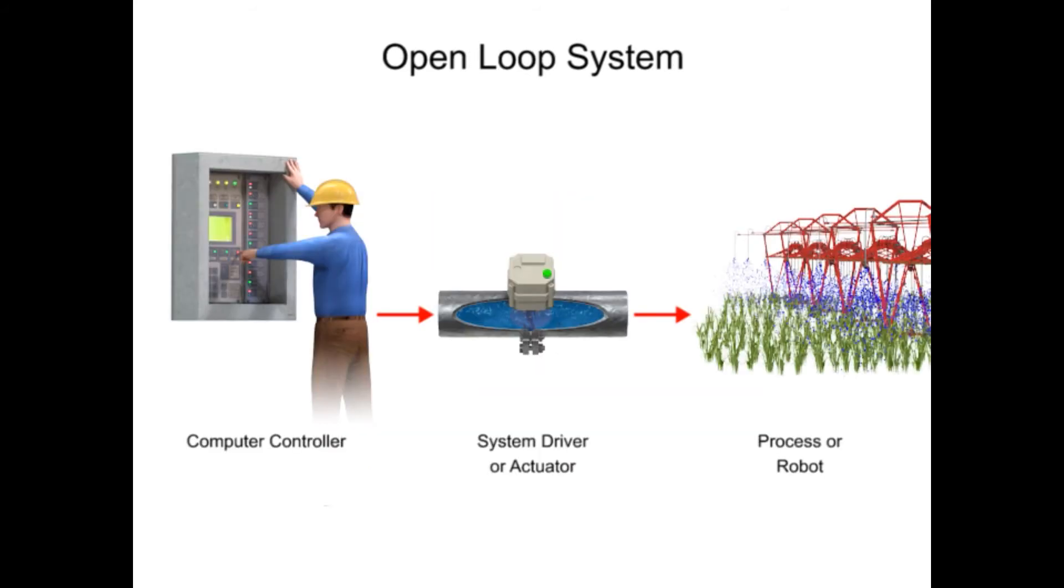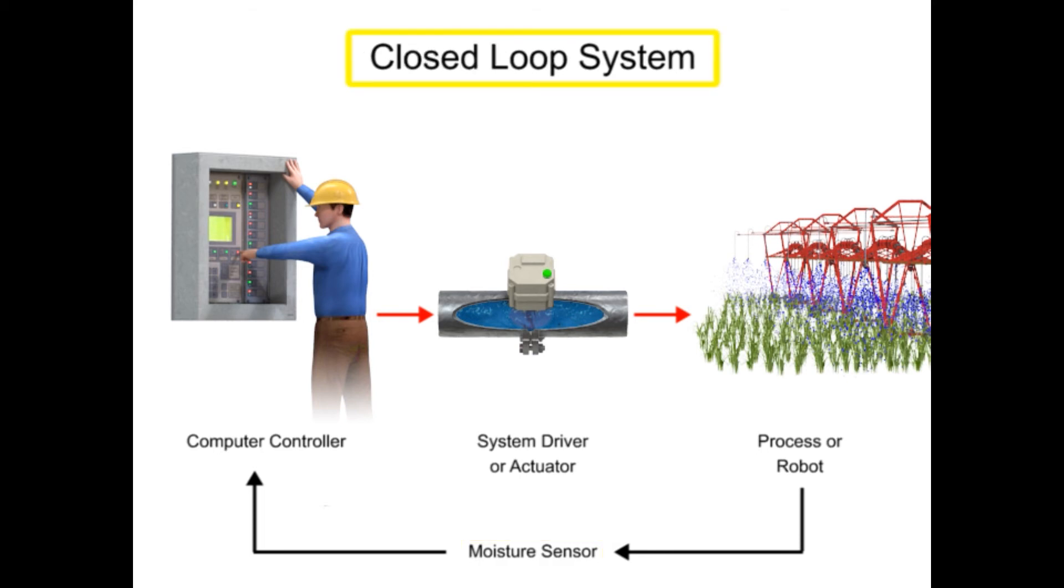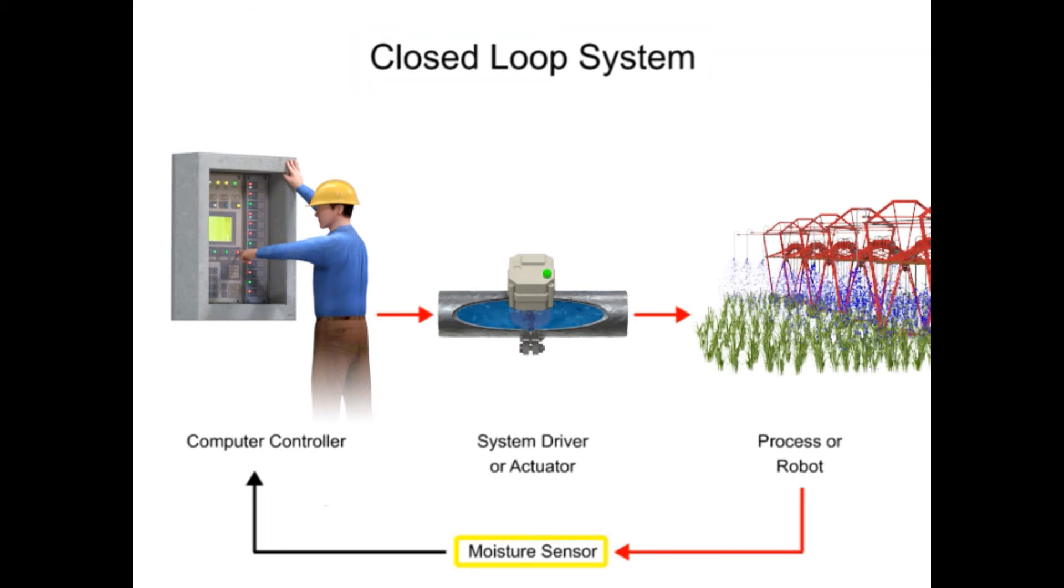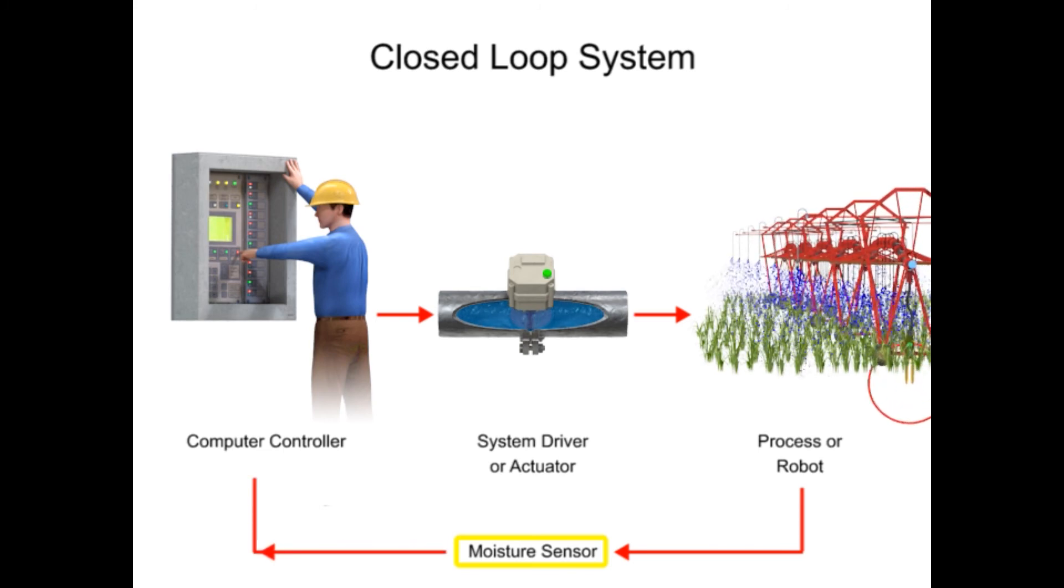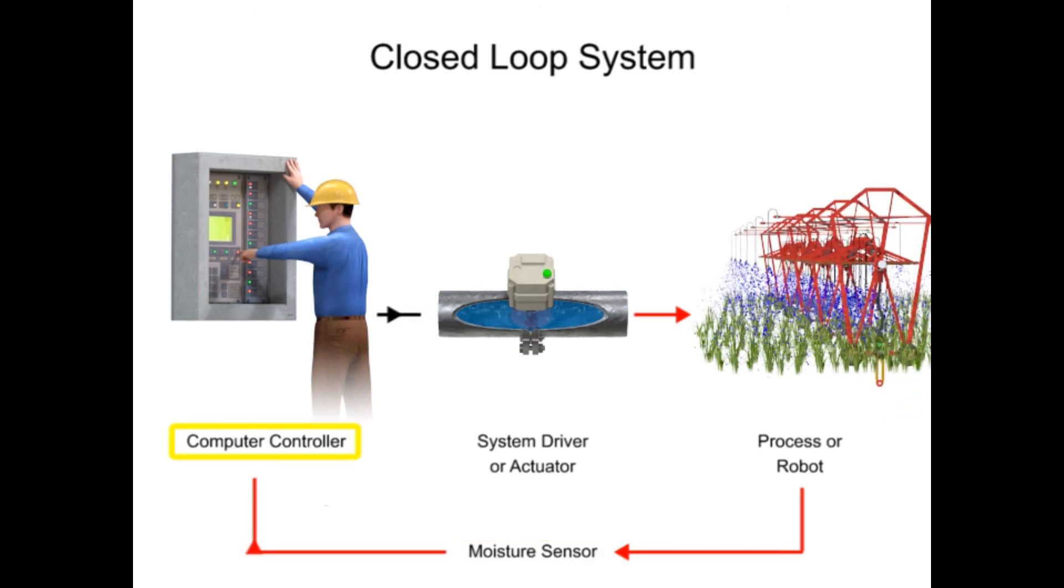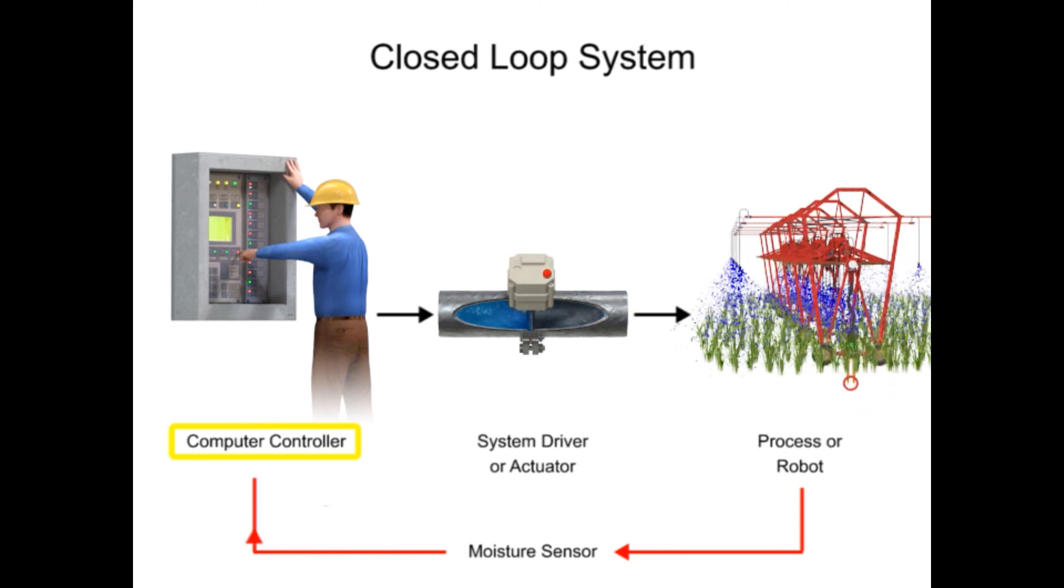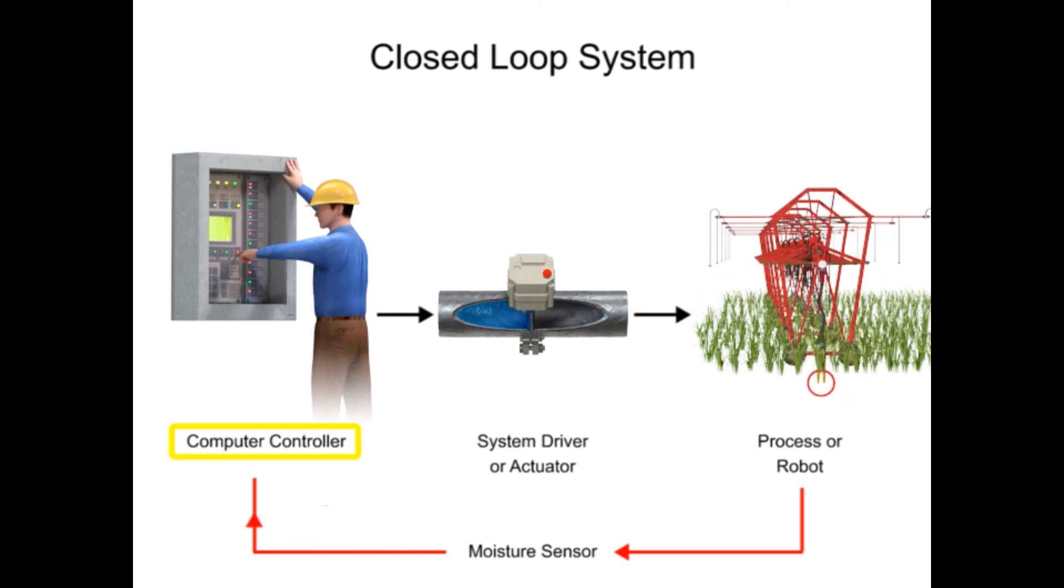In our previous example of a sprinkler, the system was open-loop because the controller received no feedback. But if a moisture sensor is added, it becomes a closed-loop system. The sensor measures the moisture density of the soil and sends that information back to the computer controller. The computer can then make adjustments to the quantity of water coming from the sprinkler.